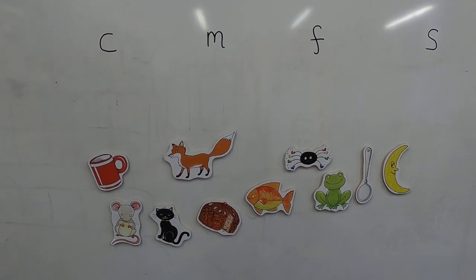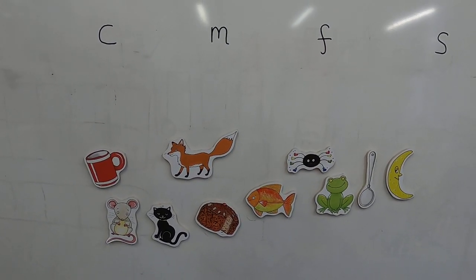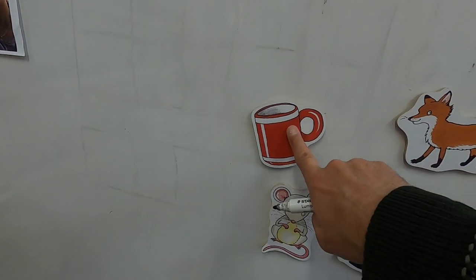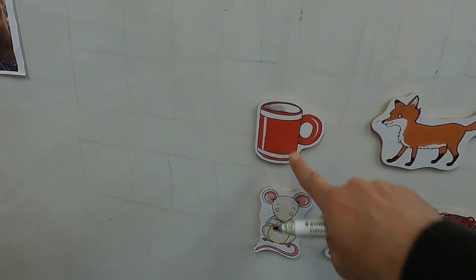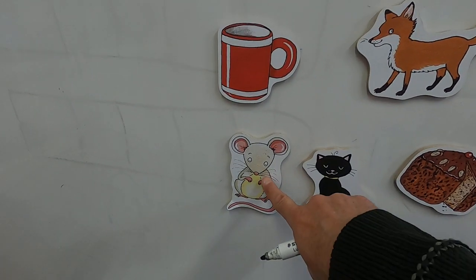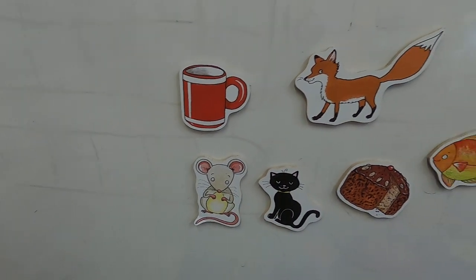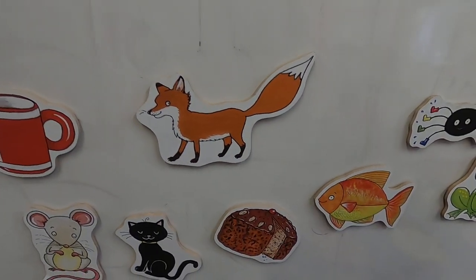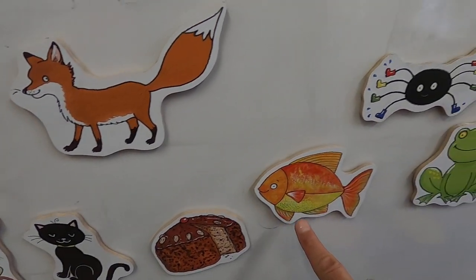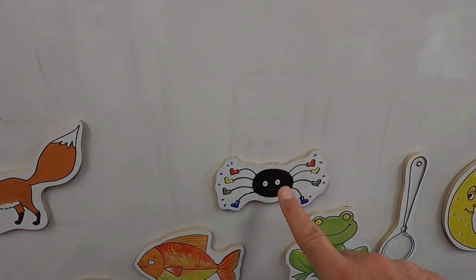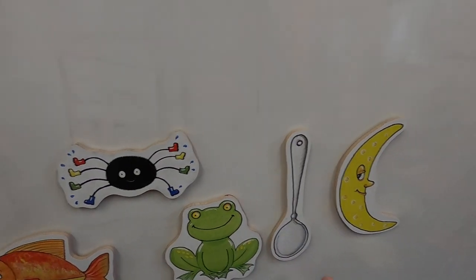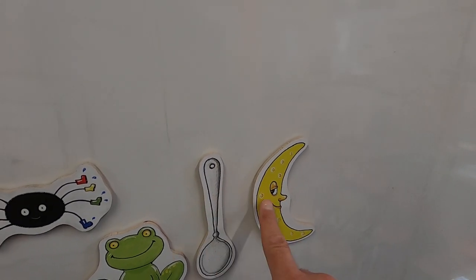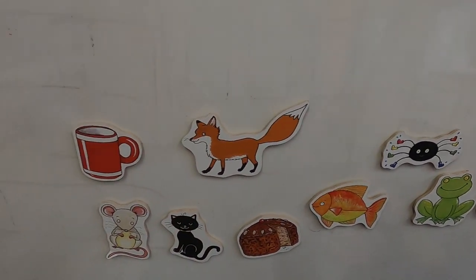Okay, and then we're going to find which ones match. So first thing, let's say what the words are. We've got a cup, a mouse, a cat, a fox, a cake, a fish, a spider, a frog, a spoon and a moon. Oh, spoon and moon. Okay, let's see.